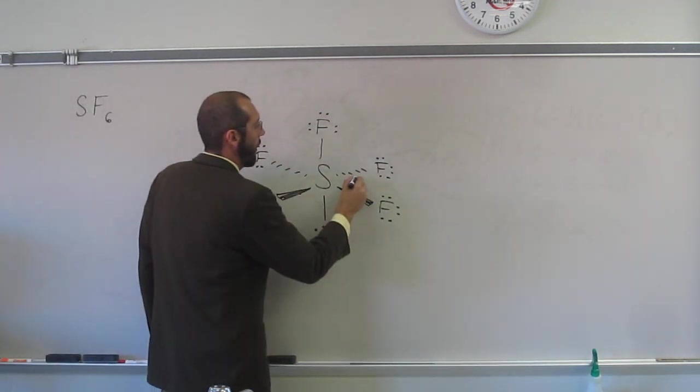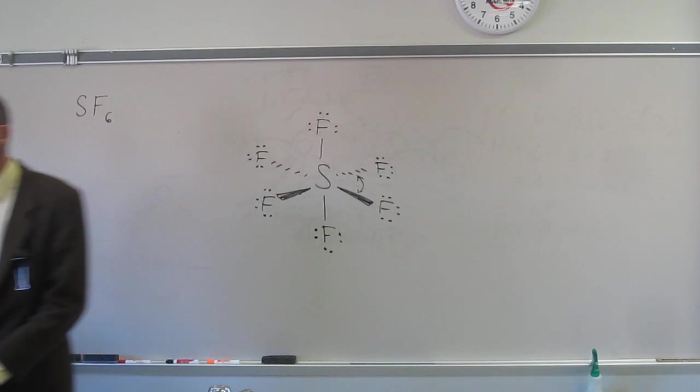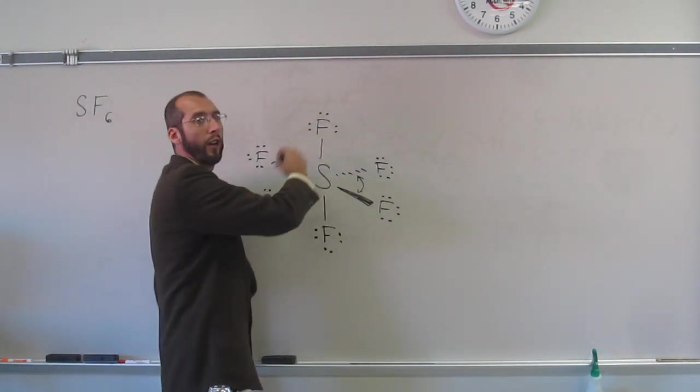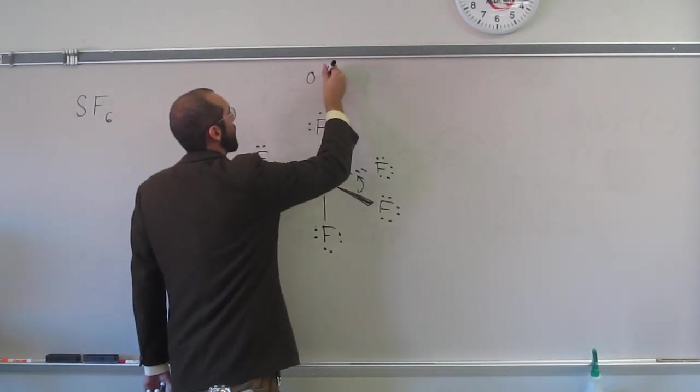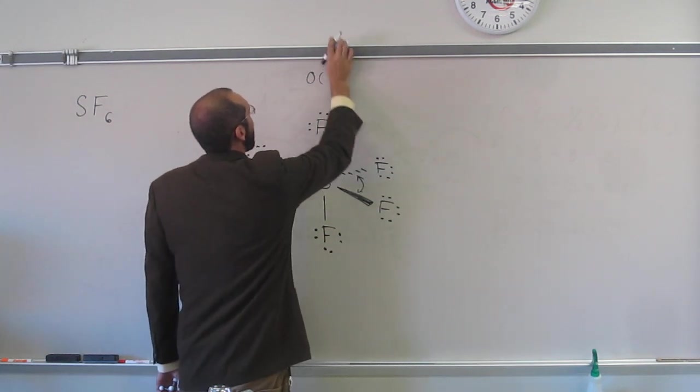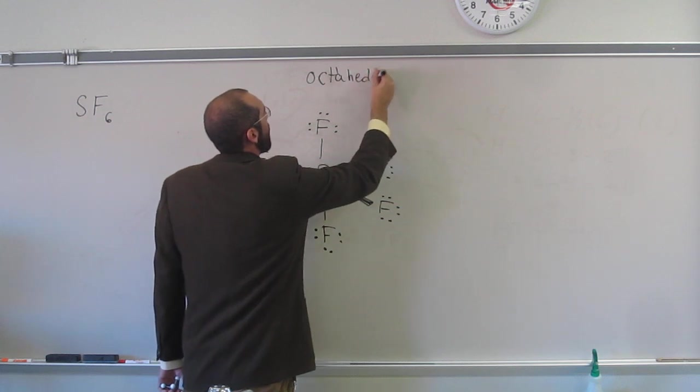So what would be the bond angle between here and here, predicted bonding? What would you expect it to be? So this is called, so I guess the structure, I guess I should say, both the electronic and the molecular is called octahedral.